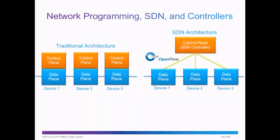In this image, you can see a comparison between a traditional architecture and an SDN architecture. Notice how in the traditional architecture, each device — Device 1, Device 2, and Device 3, let's say they're network switches — each device has a control plane and a data plane. And so to configure those devices, you configure the control plane on each of those devices.